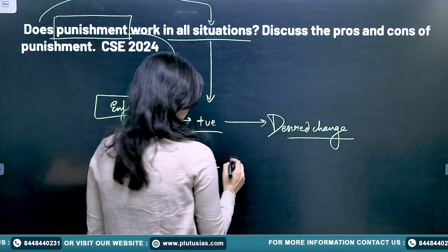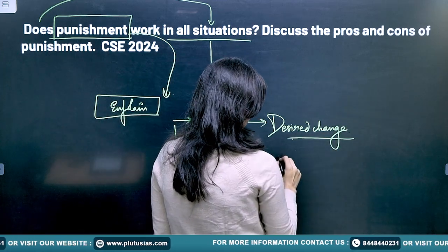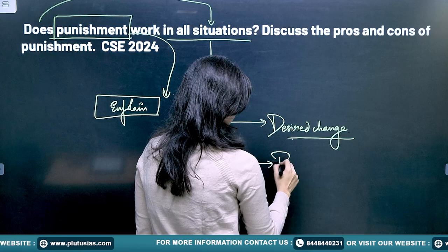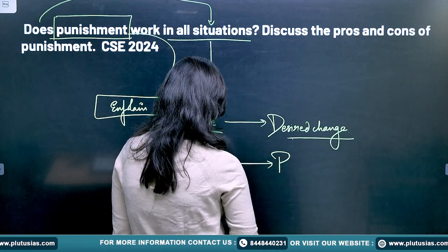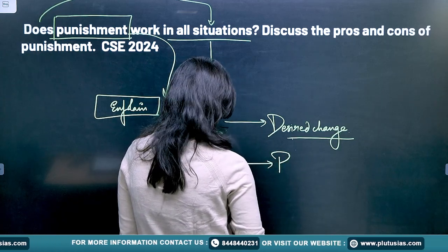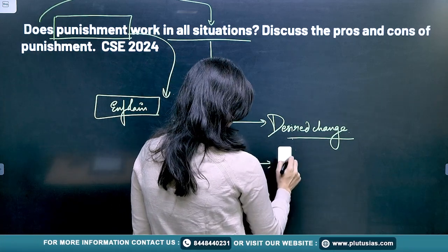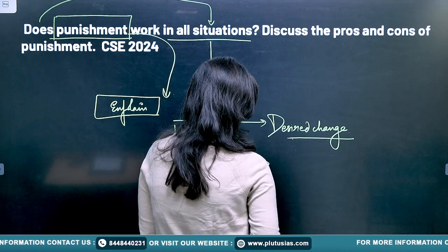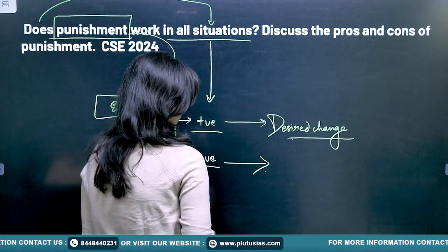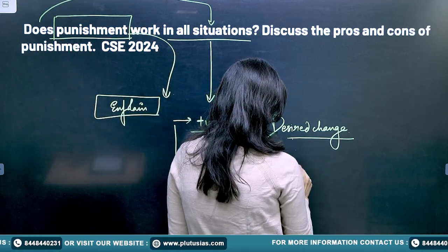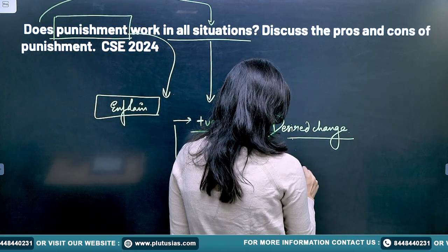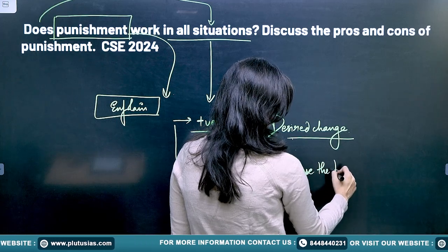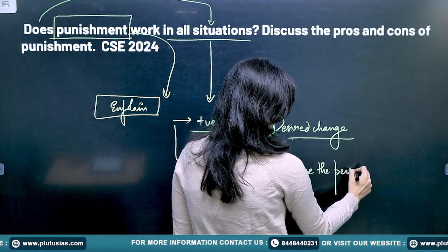Positive punishment is what you use to add something to increase a certain behavior, while negative punishment is what you apply when you want to decrease a person's behavior.